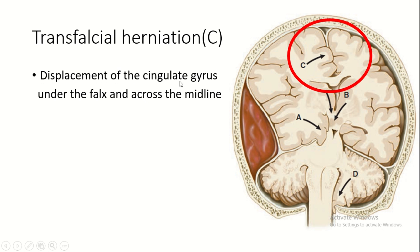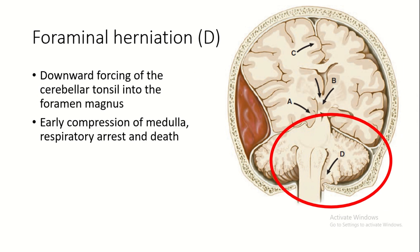The next type is transfalcial herniation, where there is displacement of the cingulate gyrus, indicated by letter C, under the falx and across the midline causing symptoms. The next type is foraminal herniation, where there is downward forcing of the cerebellar tonsil into the foramen magnum, as indicated by letter D.